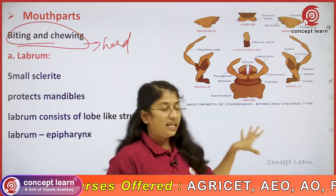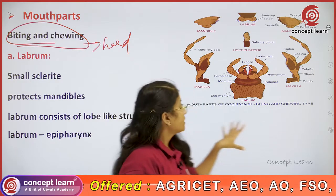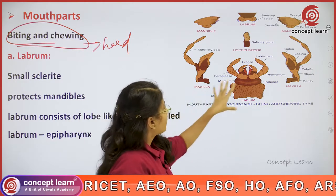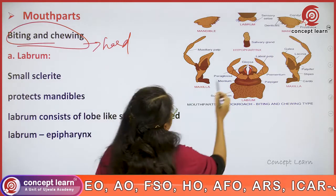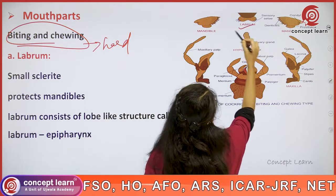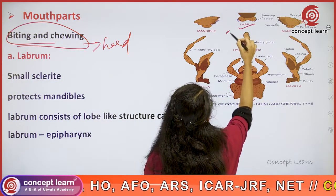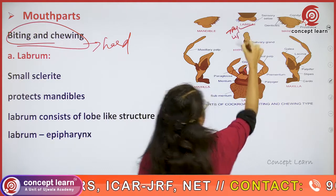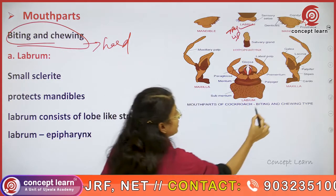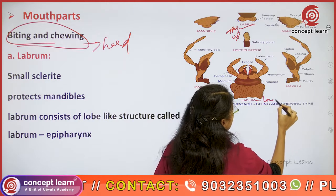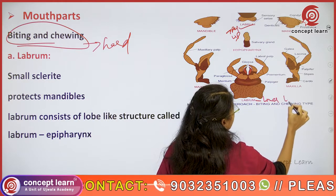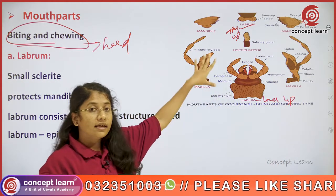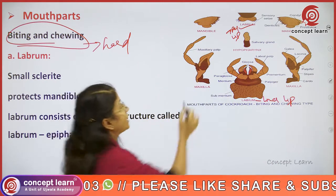This is the basic part where it will be having few mouth parts. Here, if you see, this is the labrum which is known as the upper lip, and this is the labium which is known as the lower lip, and here it will be having a pair of mandibles.